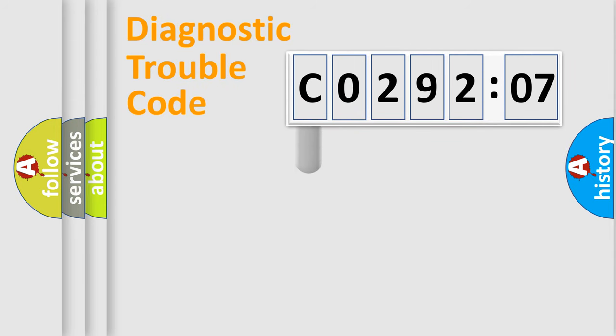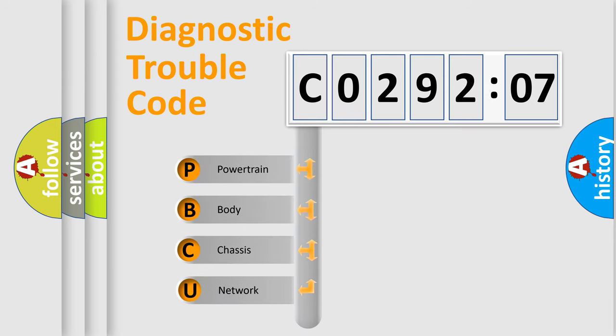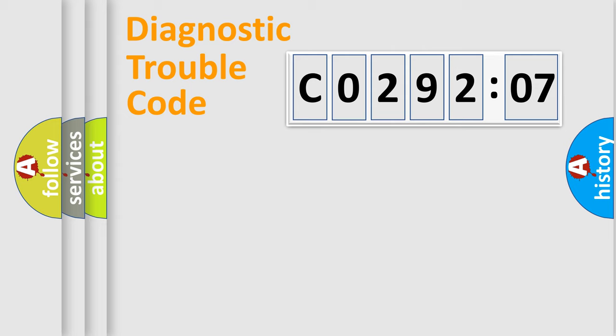First, let's look at the history of diagnostic fault code composition according to the OBD2 protocol, which is unified for all automakers since 2000. We divide the electric system of automobile into four basic units: Powertrain, Body, Chassis, and Network.